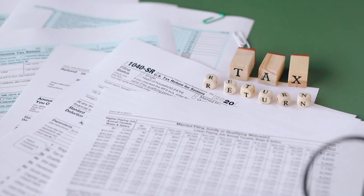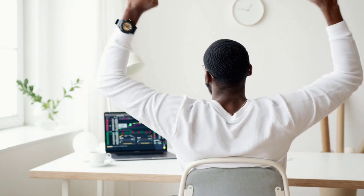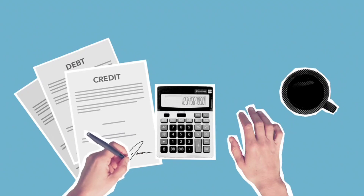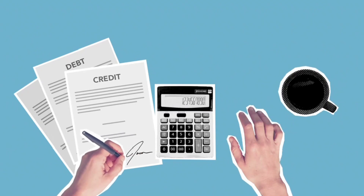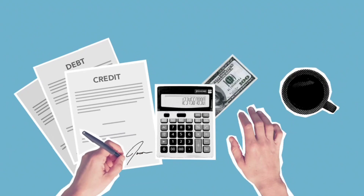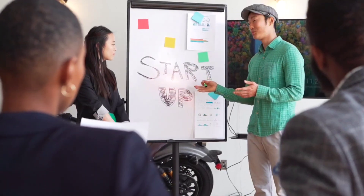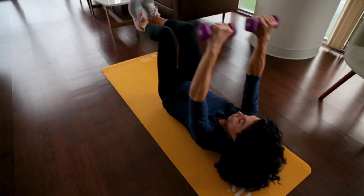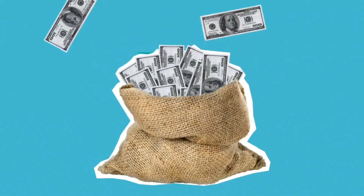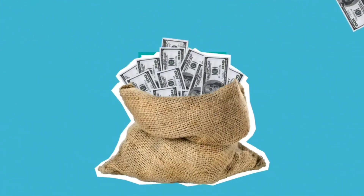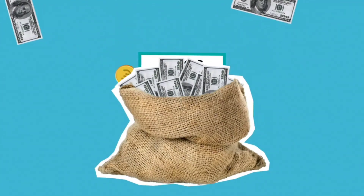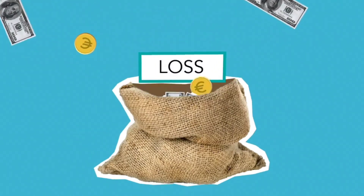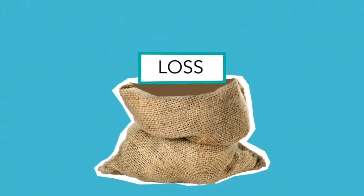It provides a framework for investors to evaluate the risk and return of a particular investment, and it is widely used in the investment industry. The core concept of the CAPM is that the expected return on an investment should be directly related to its systematic risk, also known as beta.